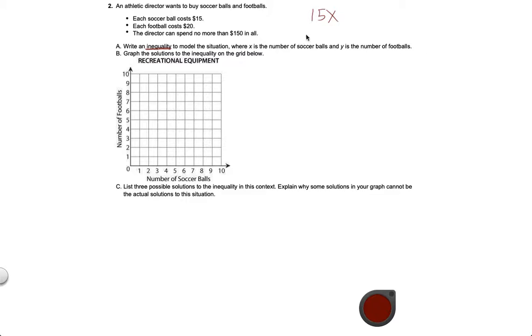And Y is the number of footballs. Footballs cost $20. So $20 every time we buy a football. You can spend no more than $150 in all. So we spend $15 for the number of soccer balls, we spend $20 for the number of footballs, and we cannot spend more than $150. We can spend $150 but we can't spend any more than $150. So less than or equal to $150.